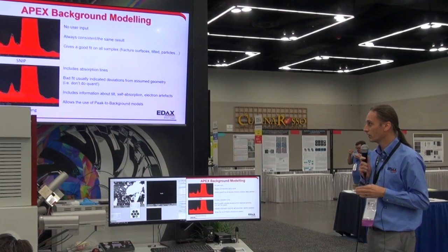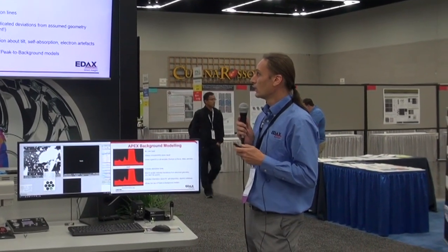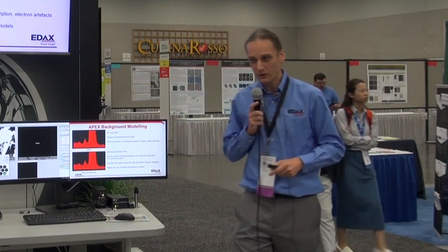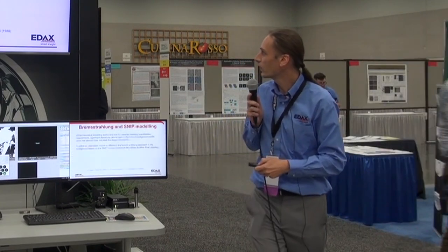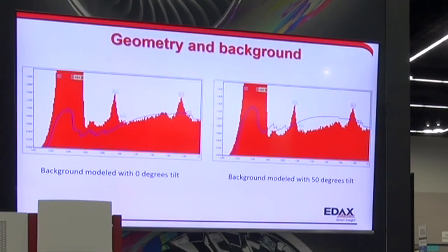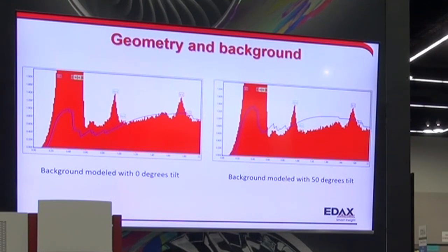The Bremsstrahlung is generally my recommendation. If you're doing quantification, there's a lot of useful information hidden in the Bremsstrahlung model. But if you're doing qualitative analysis — just figuring out what elements are in there — and you're looking at a fracture surface, particulates, or whatever, you can get a bad fit. You'll get something like what we have here where you have a misfit — the background is higher than the signal — and if you're trying to figure out whether you have a peak there, you're cutting off over half the counts. The SNP model would just model the background in that case, making it easier to identify peaks.